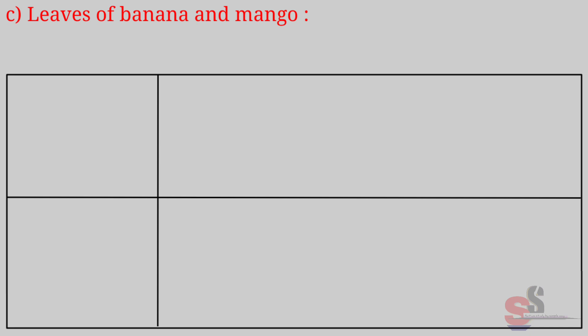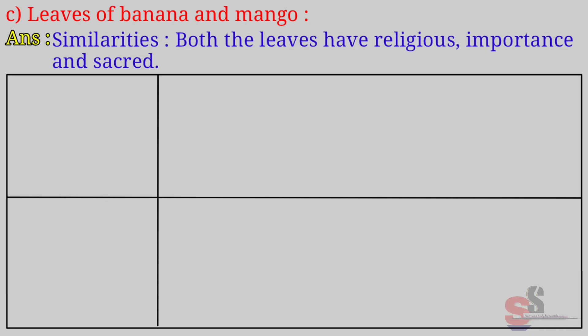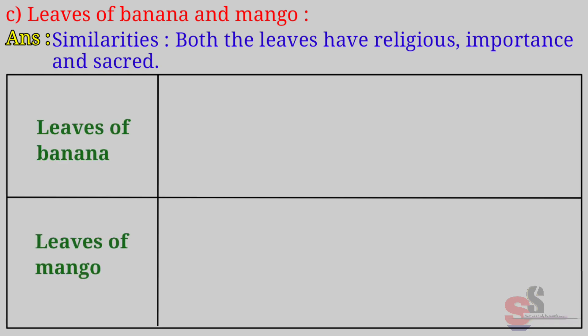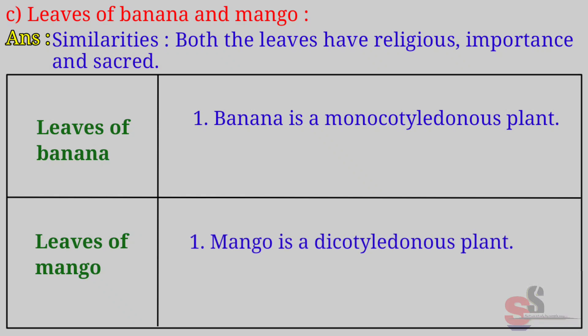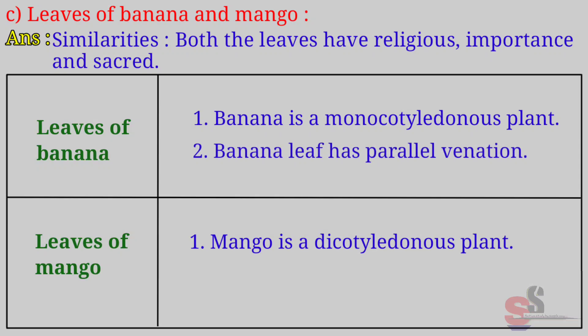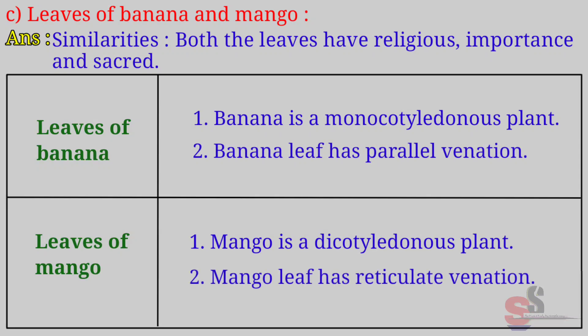C. Leaves of banana and mango. Similarities: Both leaves have religious importance and are considered sacred. Differences: Banana is a monocotyledonous plant; Mango is a dicotyledonous plant. Banana leaf has parallel venation; Mango leaf has reticulate venation.